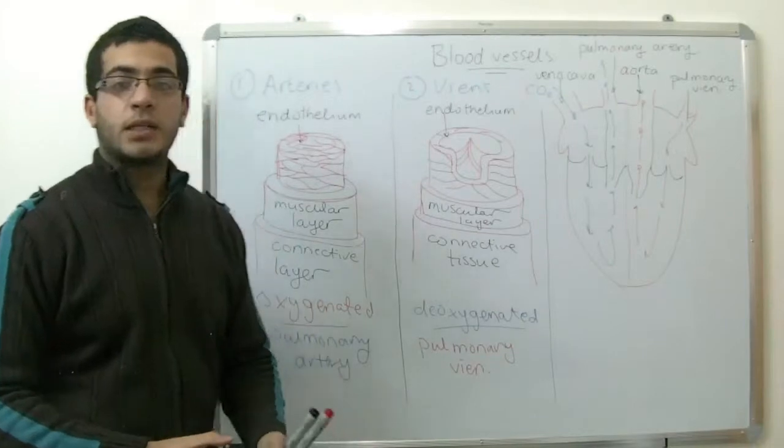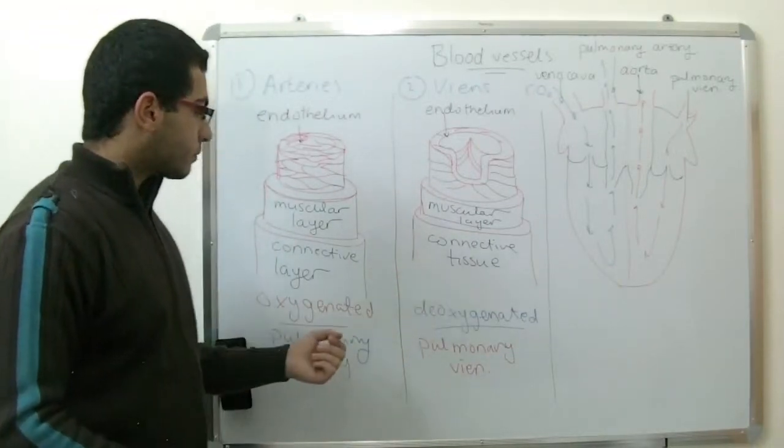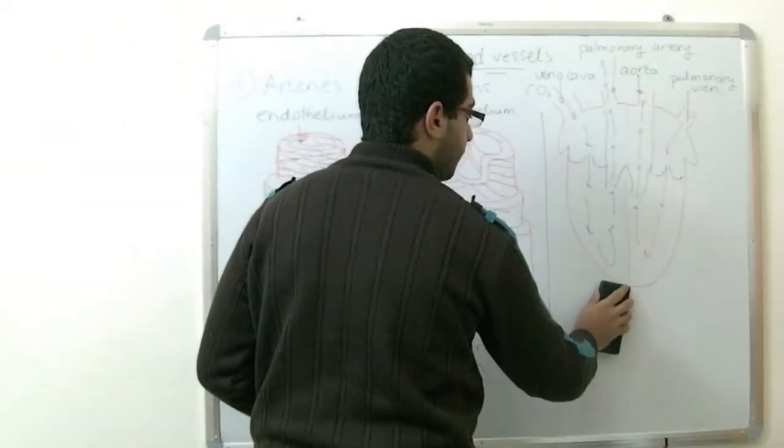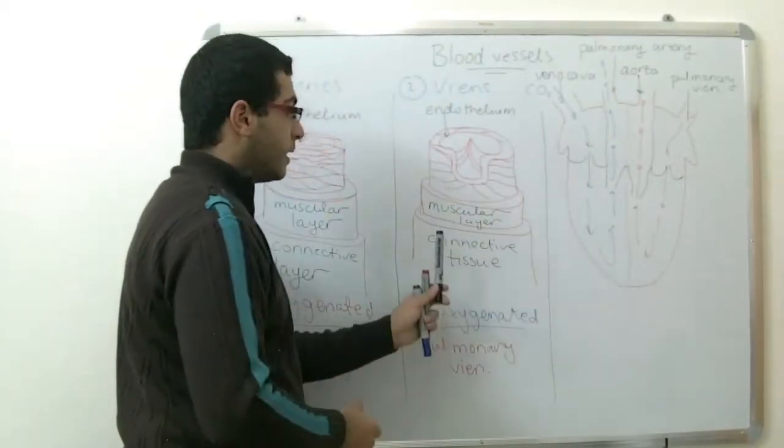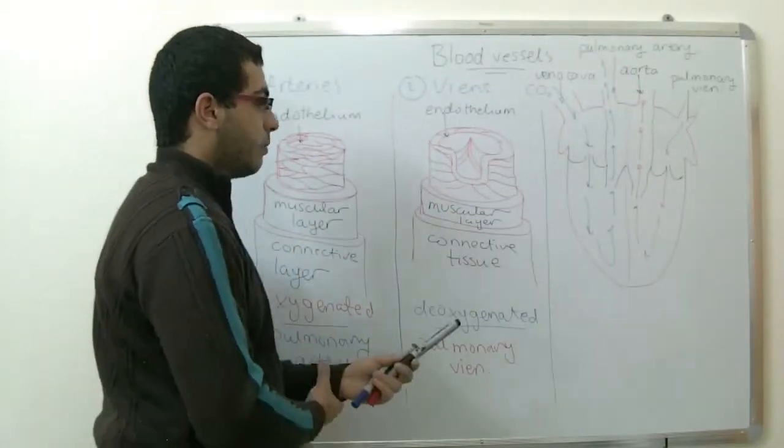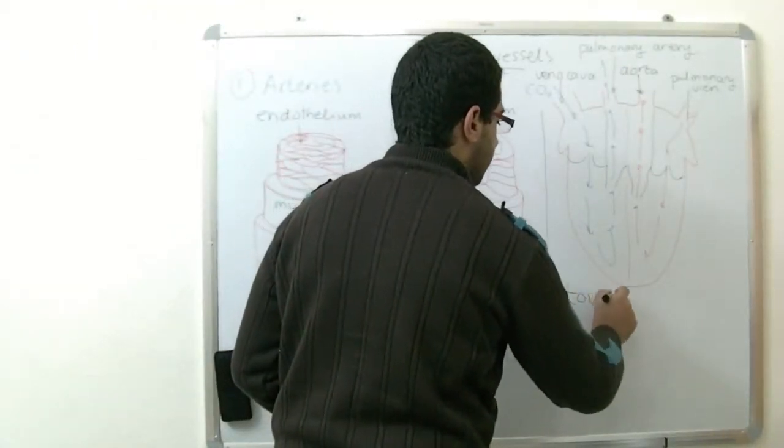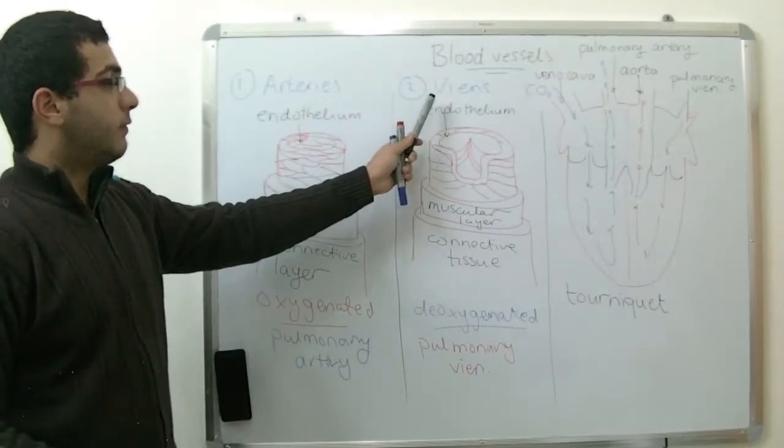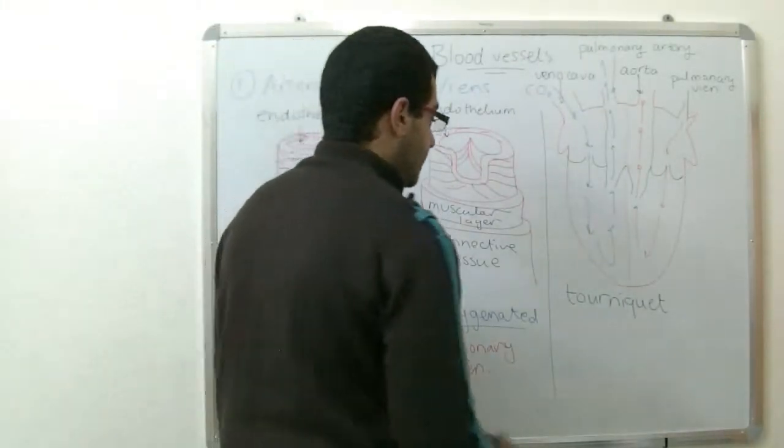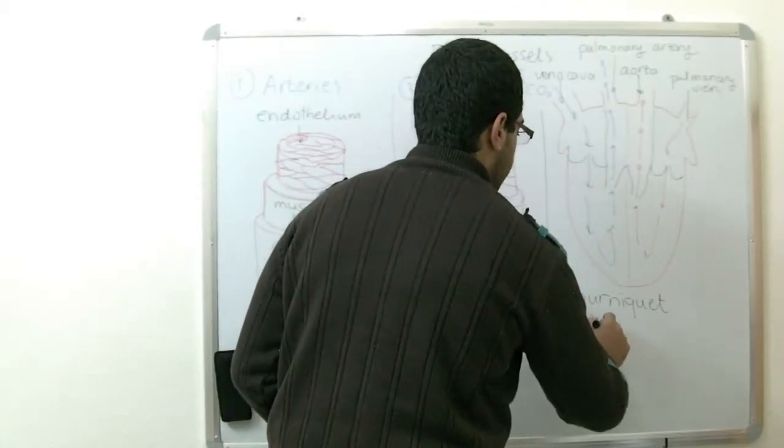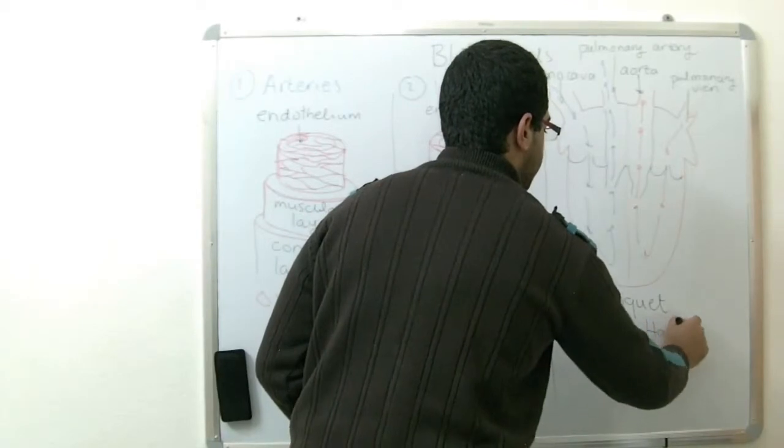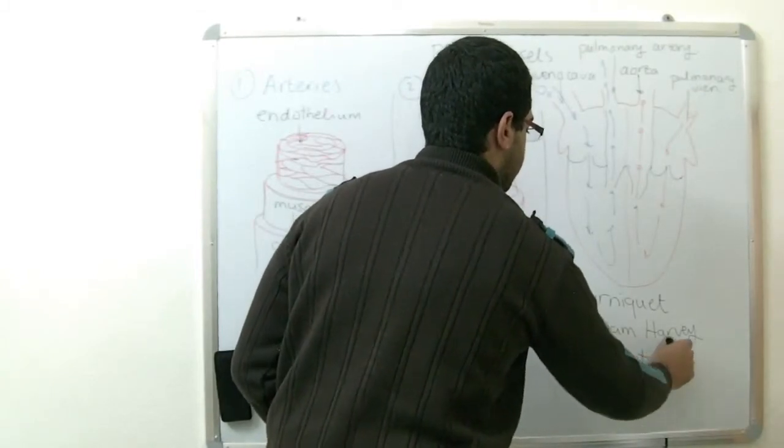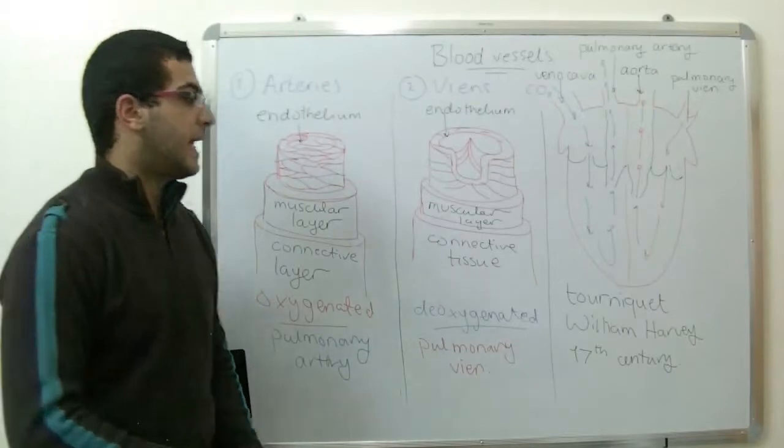We can take notice of the presence of the veins in our bodies by tying a tourniquet at the arm, and the blood flow through the veins and the arteries will appear. And this is what a scientist called William Harvey, an English scientist, did in the 17th century to discover the circulatory system.